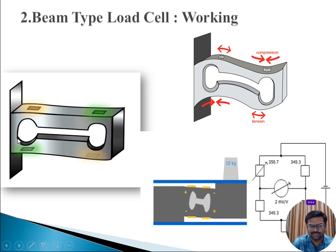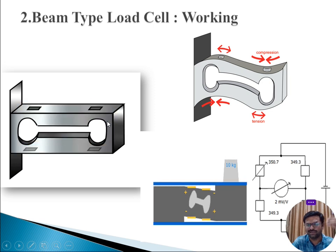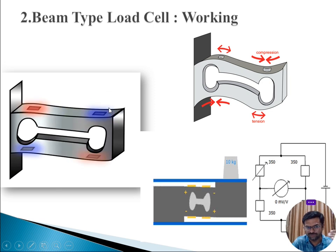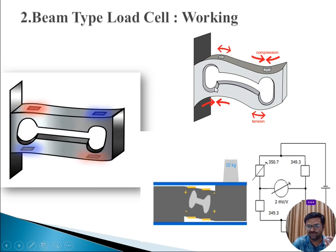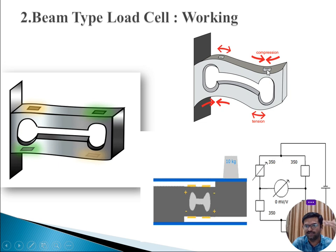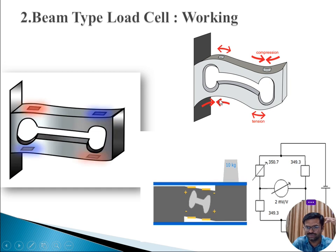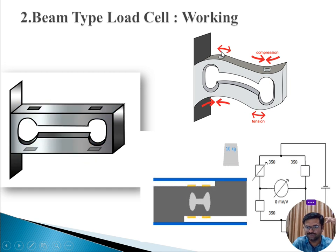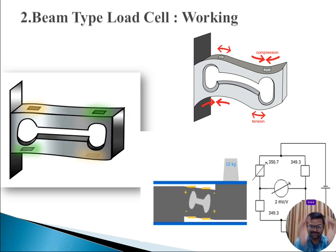For the beam type load cell, one end is connected to a rigid support and the other end is hanging with a spring. When you apply a certain force, the beam moves. You can observe there are four strain gauges. When force is applied, the first strain gauge experiences compression, the second experiences tension, the third experiences compression, and the fourth experiences tension.